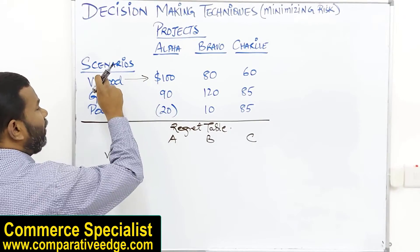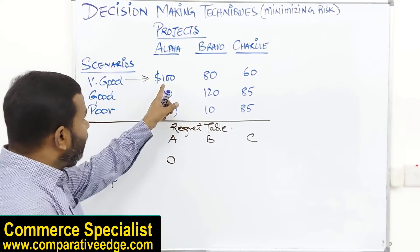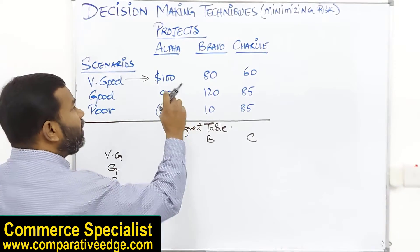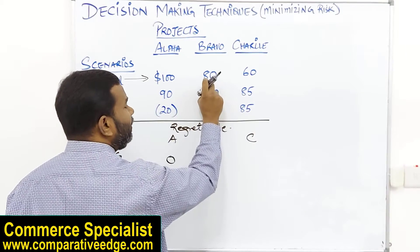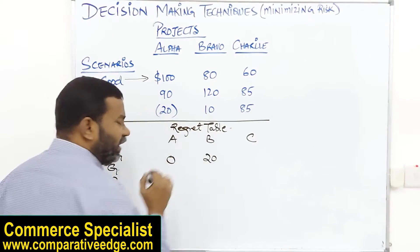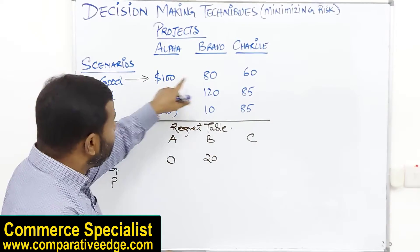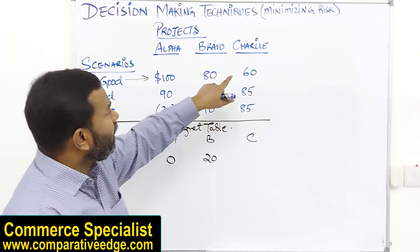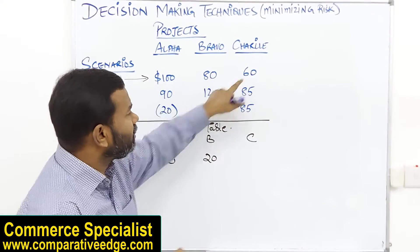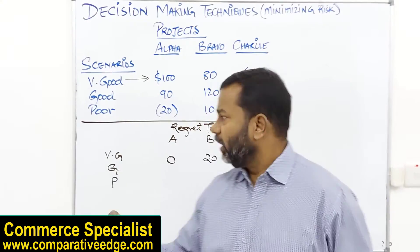In the 'Very Good' economy row, among all profit outcomes for Alpha, Bravo, and Charlie, the highest is $100. If I choose Alpha at $100, I have no regret — it's the highest. But if the highest is $100 and I choose Bravo at $80, I have a regret of $20 — that's the opportunity cost. If I choose Charlie at $60 instead of the maximum $100, I have a regret of $40.